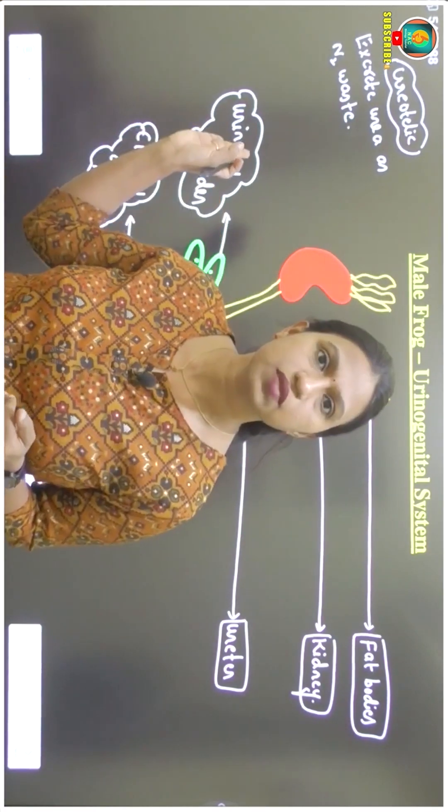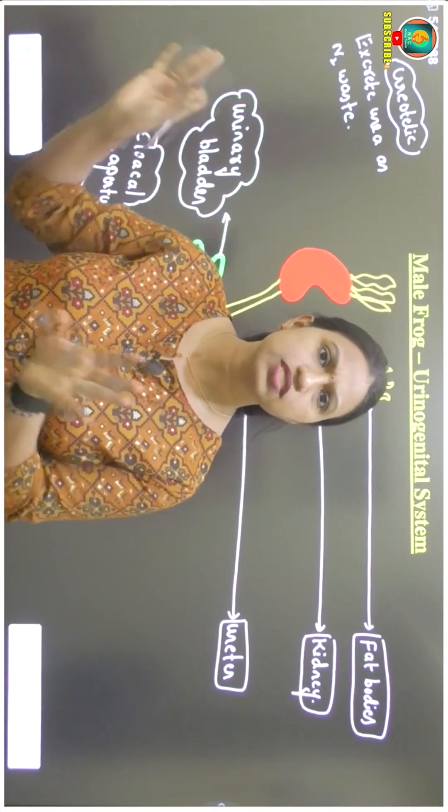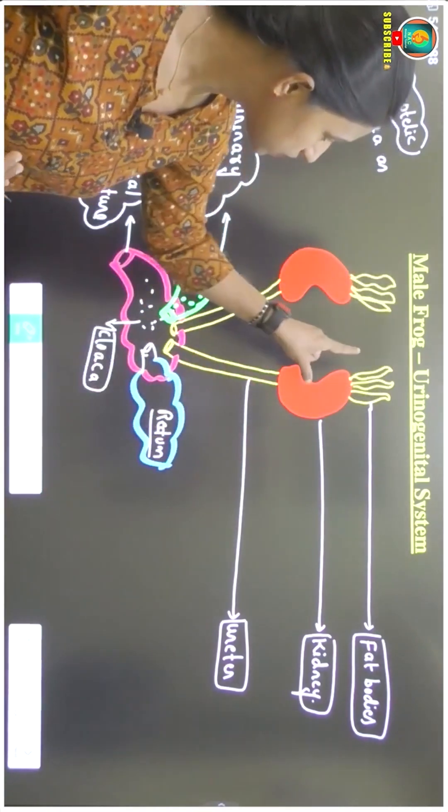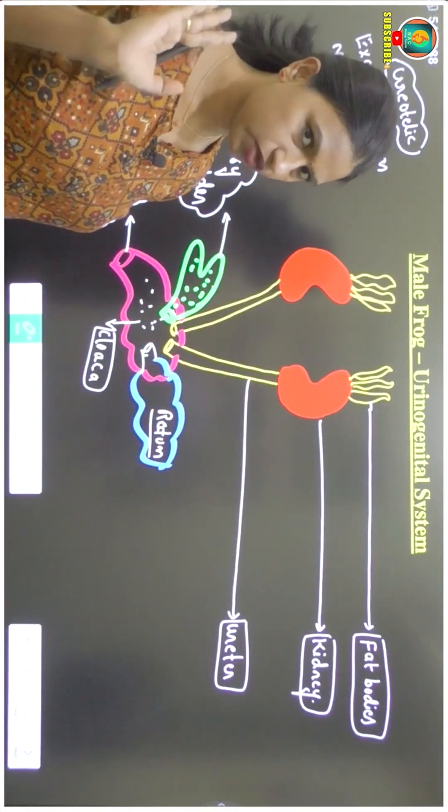We are also ureotelic. These animals are also ureotelic. So almost everything is the same. But we do not have fat bodies, but these organisms have fat bodies.